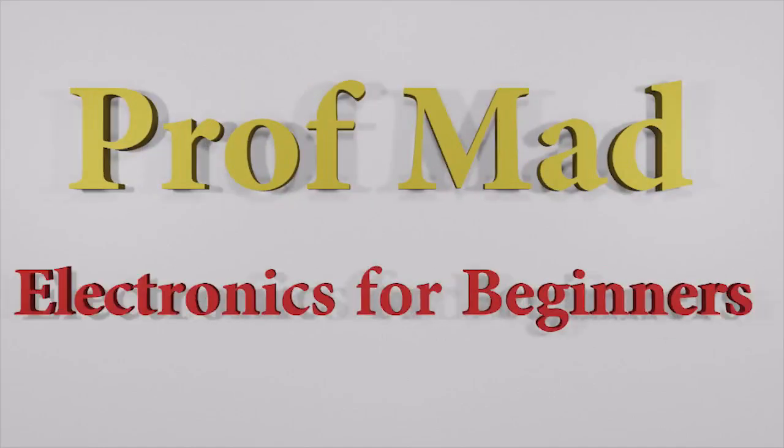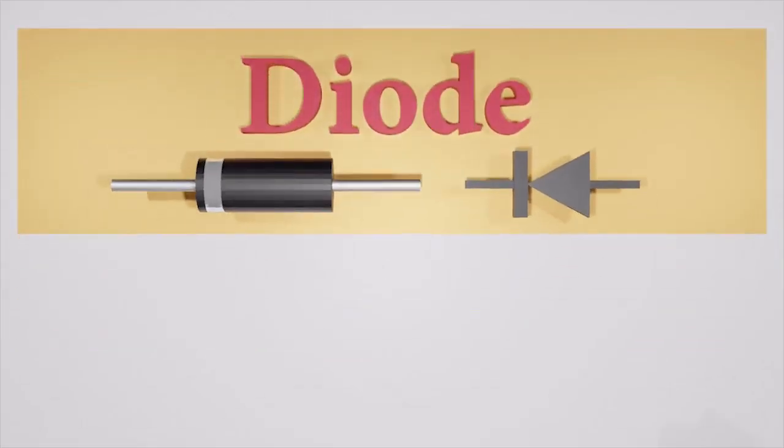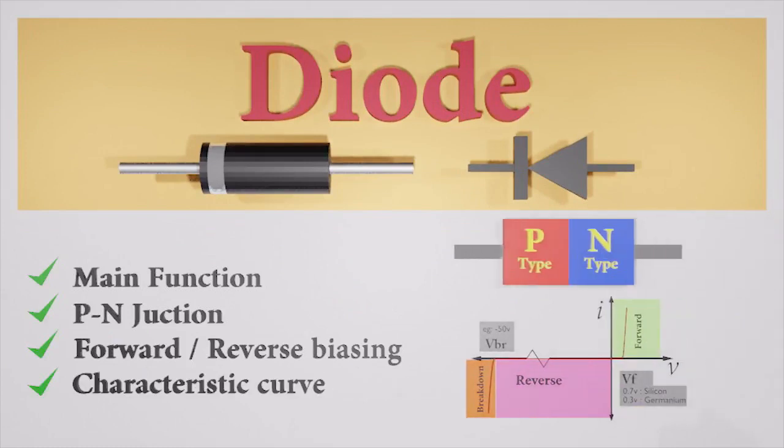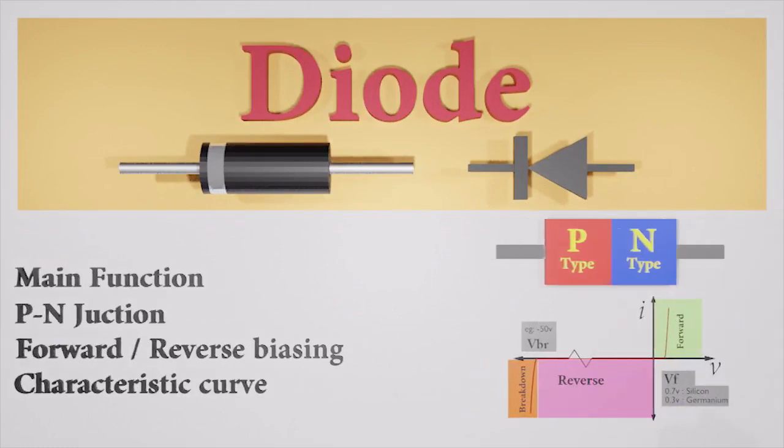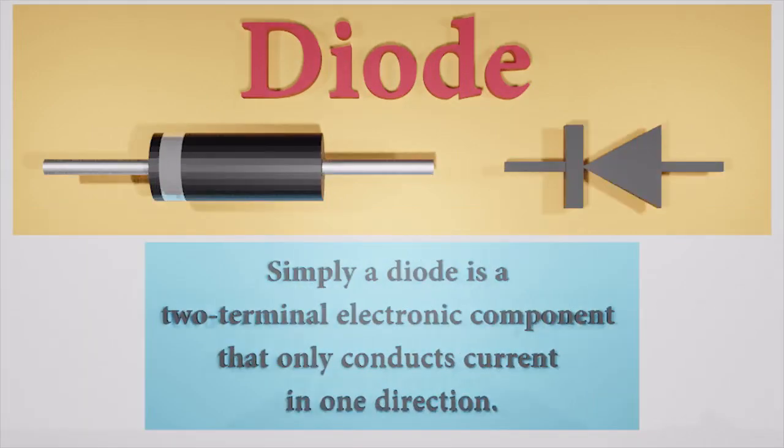Welcome to Professor Matt Electronics for Beginners. Today we are going to learn about diodes. Simply, a diode is a two-terminal electronic component that only conducts current in one direction.